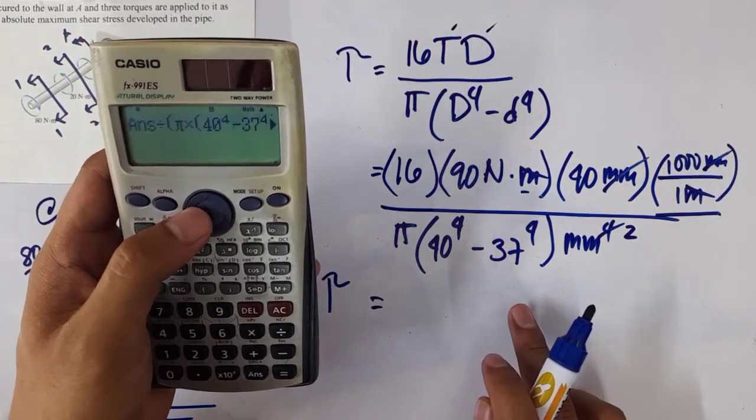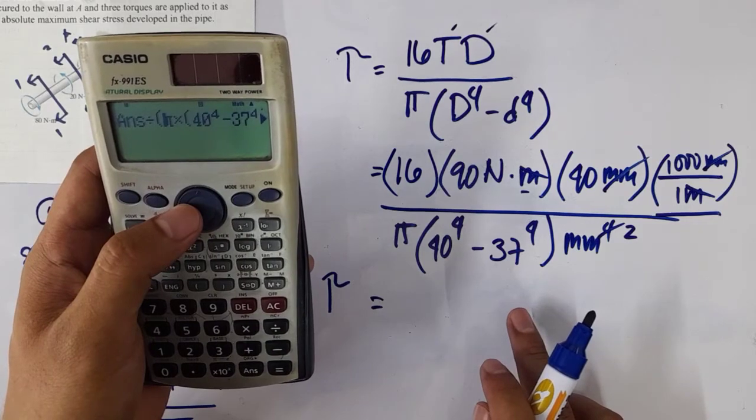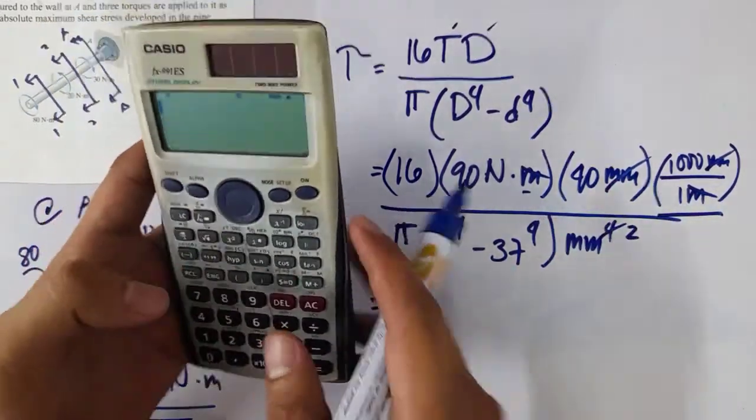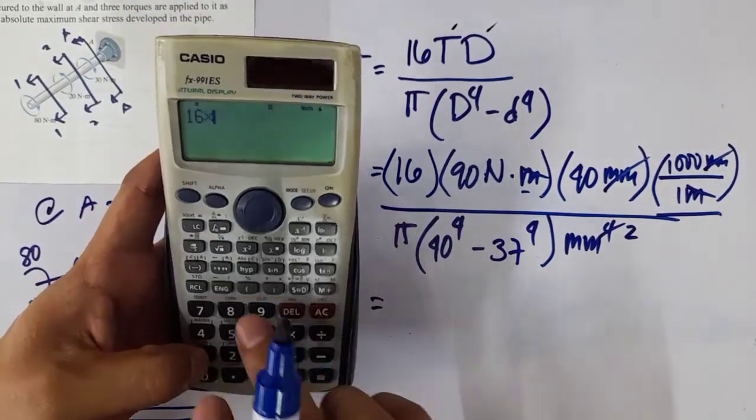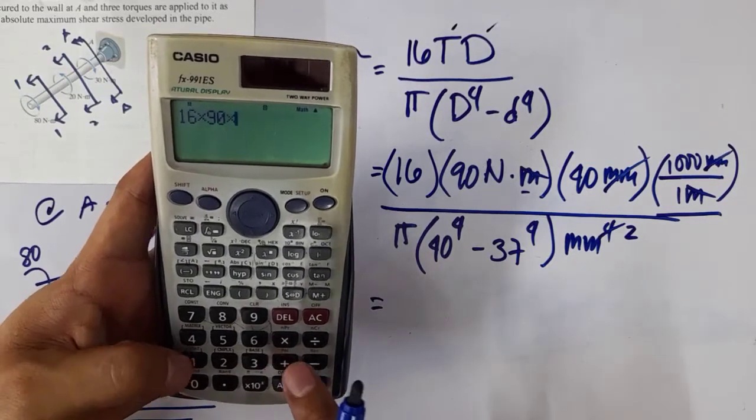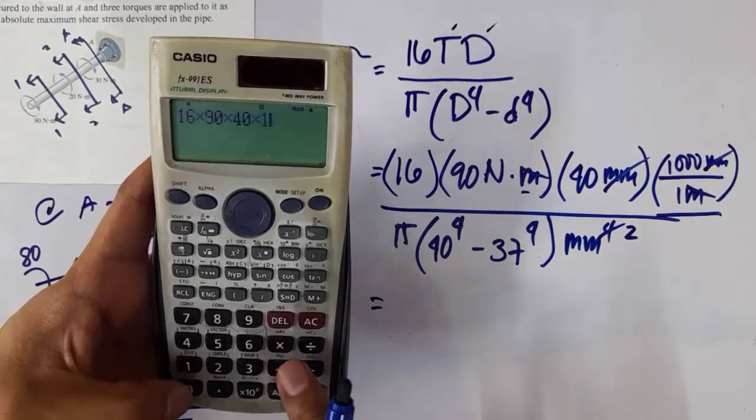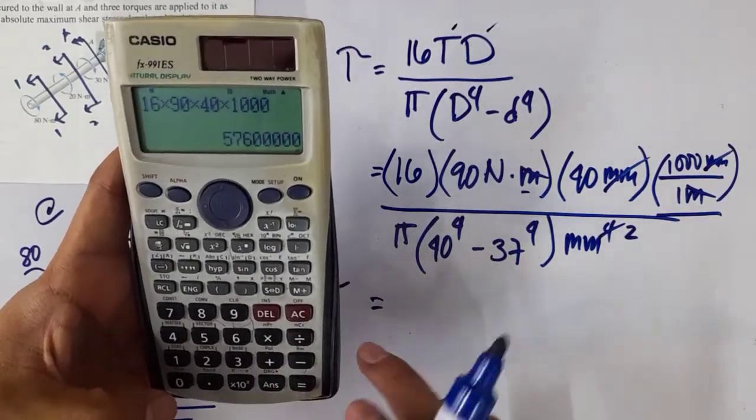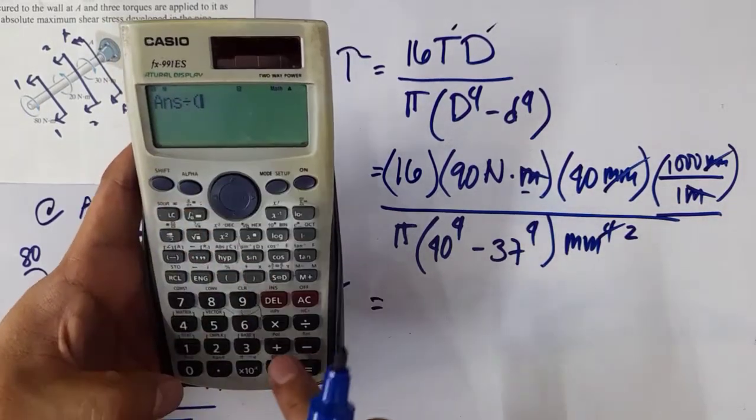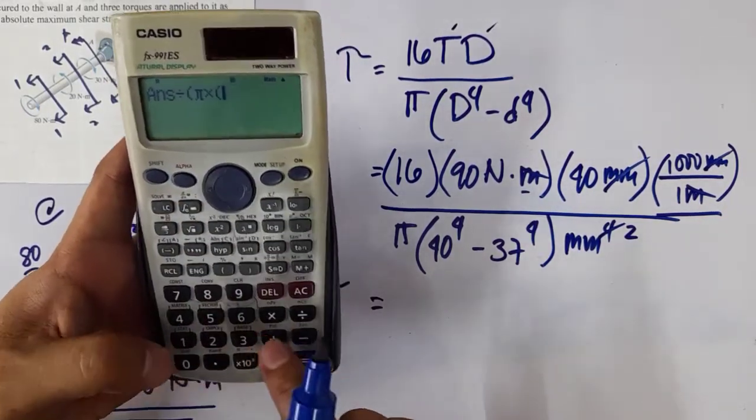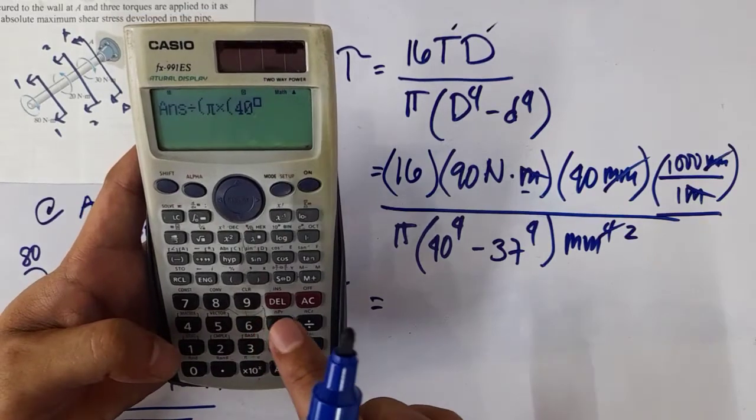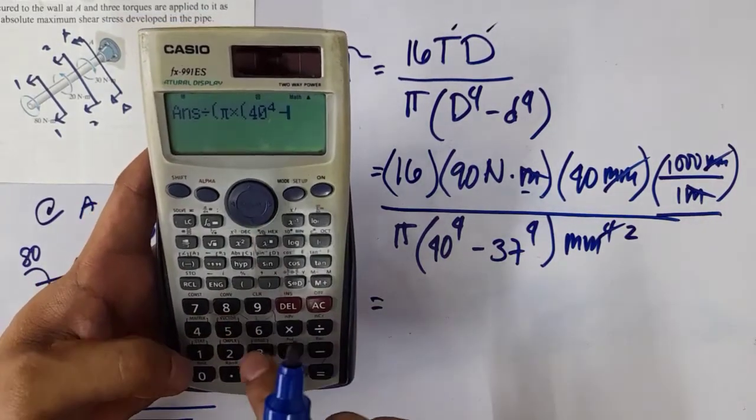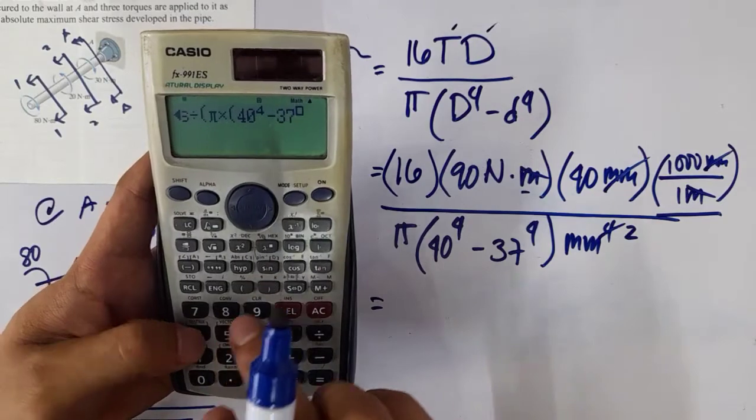It's divided by... we missed the 40 earlier. So 16 times 90 times 40 times 1000, divided by π times 40 raised to the 4, minus 37 raised to the 4.